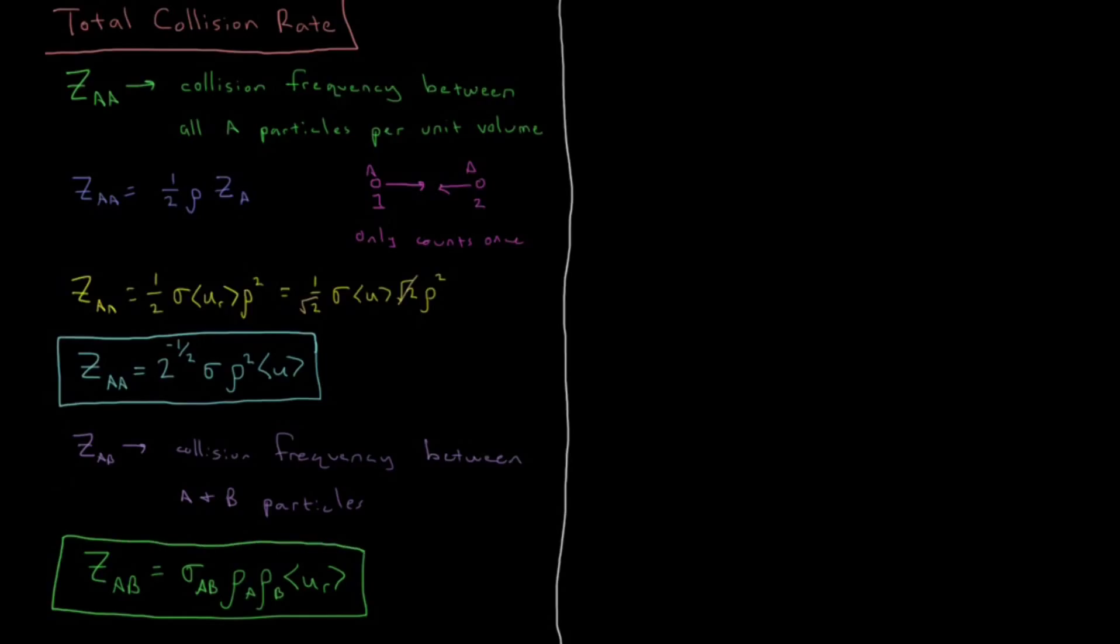So if you are talking about specific types of gas particles, this cross sectional area is slightly different than the one we defined in the previous video. That is going to be pi times then you are going to take the average of the diameter of particle A and particle B and square that.